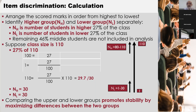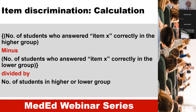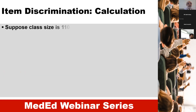We are talking about 30 students from the top and 30 students from the bottom. The formula is: the number of students who answered a particular item correctly in the higher group, minus the number of students who answered that item correctly in the lower group, divided by the number of students in the higher or lower group — since that number is the same. In our example, there are 30 students in each group.